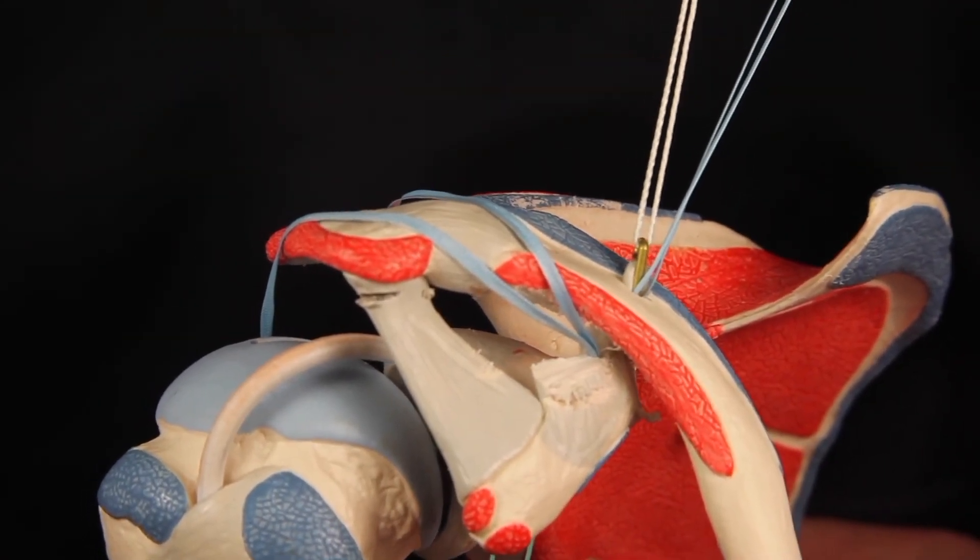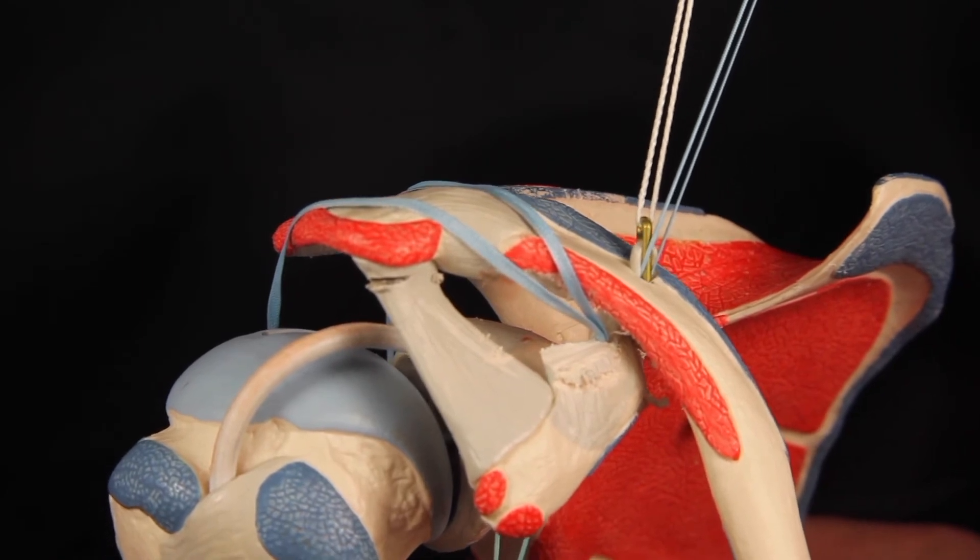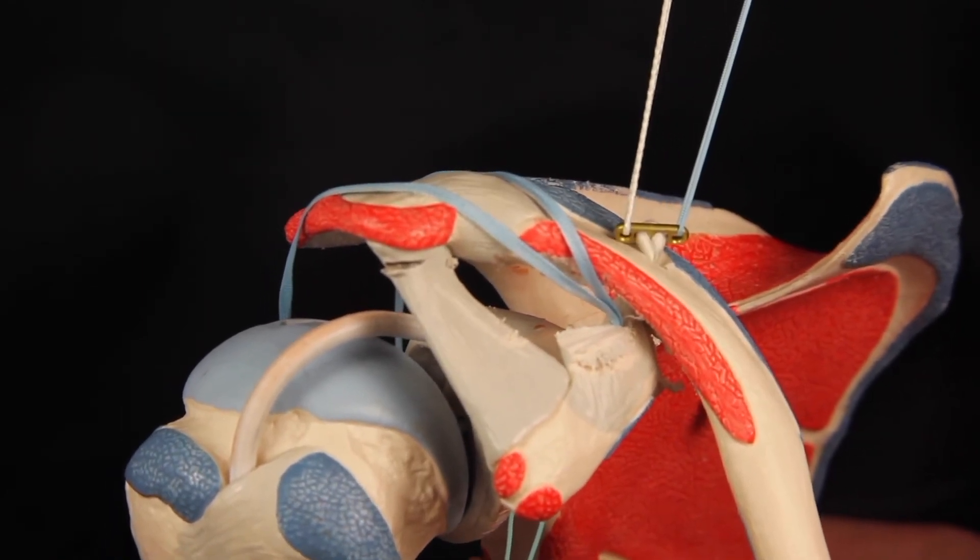Loop length can be adjusted by placing a washer or two onto the surface of the clavicle before passage and flipping.